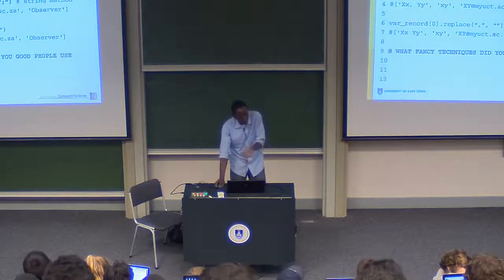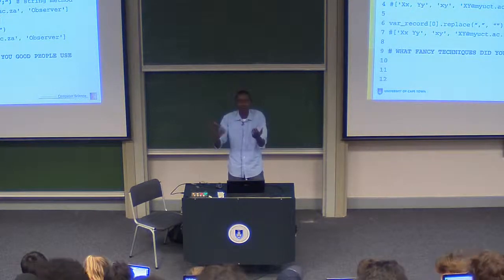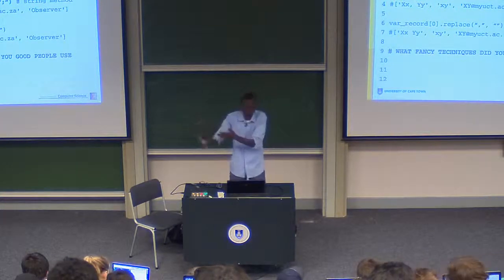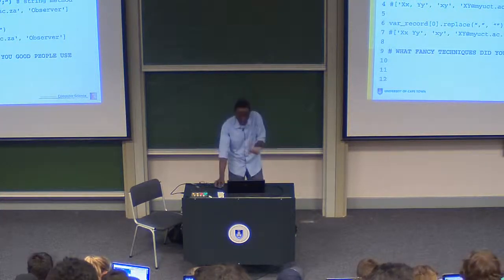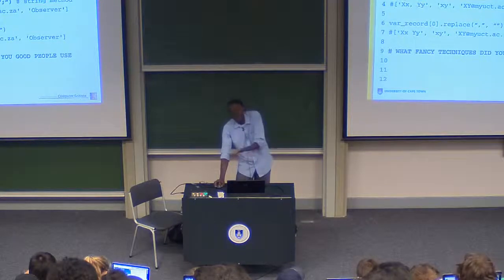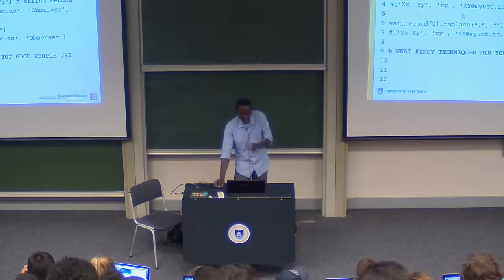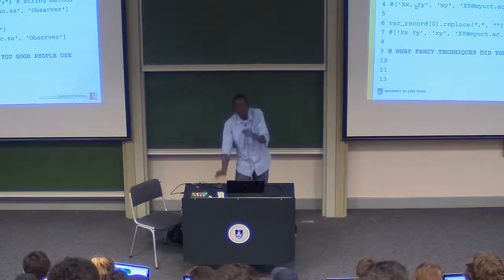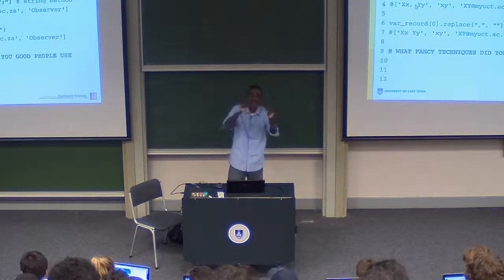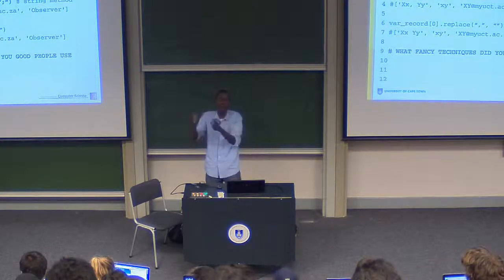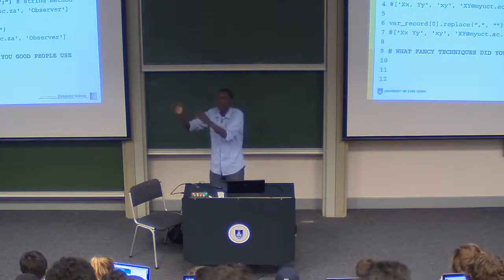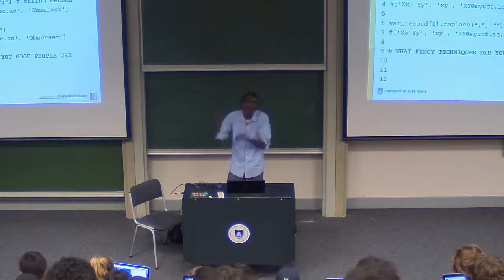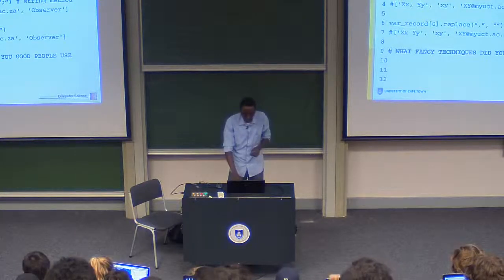So var_record here is a string, and split returns a list. What you end up with is a list, and you can do a number of things like remove the comma, because the last name is delimited by a comma, followed by the middle name and the first name.